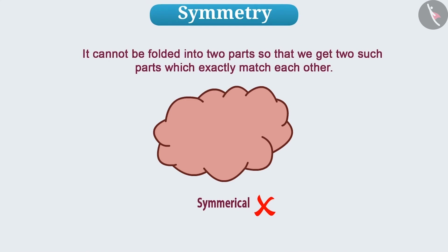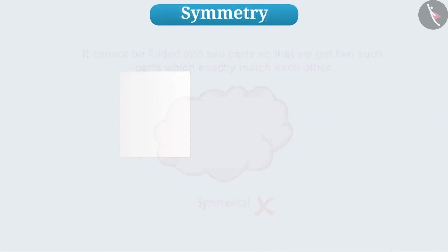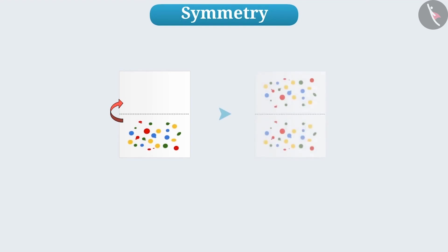Let's do a fun activity. First, take a rectangular paper. By turning it from the middle, from the width, we will divide it into two equal parts. Now, put a few drops of ink or some drops of colour on one half and press both halves on each other. On opening the paper, you will get a symmetrical shape. Try to figure out what the shape looks like — something natural or something imaginary.